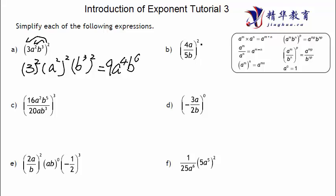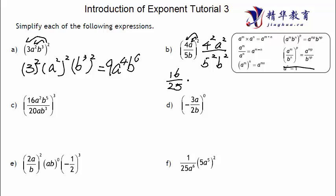The next one is also straightforward — we have (4a / 5b) to the power of 2. We apply the power to each part: 4 to the power of 2 is 16, a to the power of 2 is a squared on top, and 5 to the power of 2 is 25, b to the power of 2 is b squared on the bottom. The constant terms can't be simplified further, and a squared over b squared is already fully simplified — that's the answer.